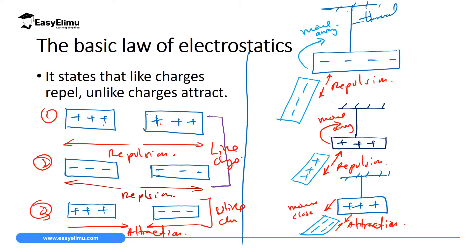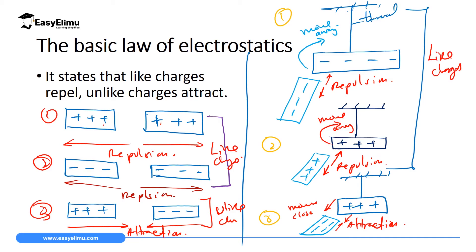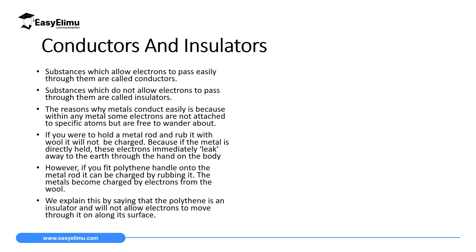In these three setups: in the first two cases, when you have two materials with the same charge — negative and negative, or positive and positive — there will be repulsion. These are like charges, and like charges repel. In the last setup, setup three, you are introducing unlike charges, and when you have unlike charges, attraction takes place. That is what in simple terms we call the basic law of electrostatics.